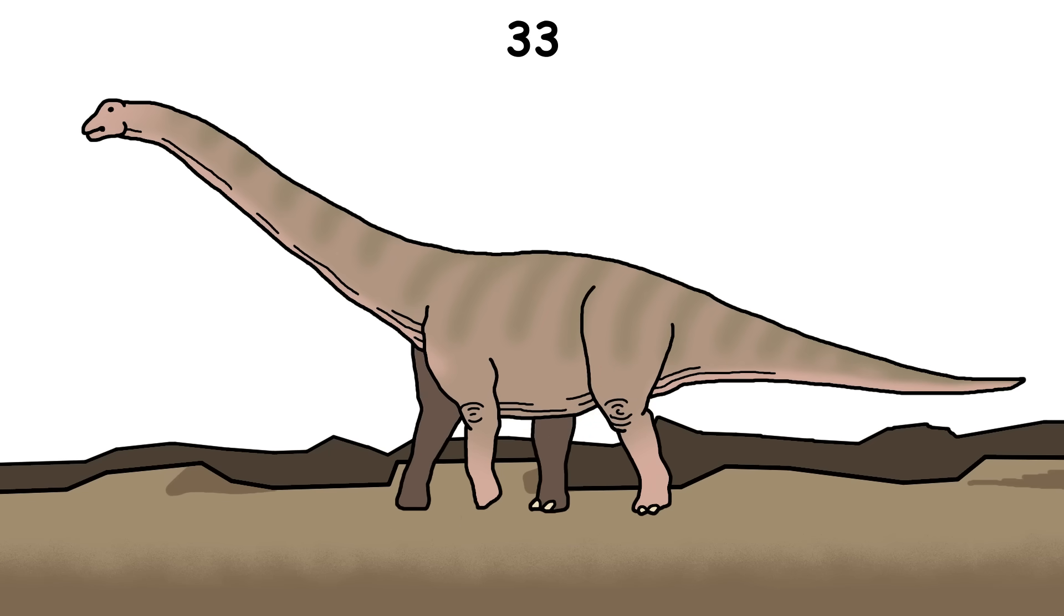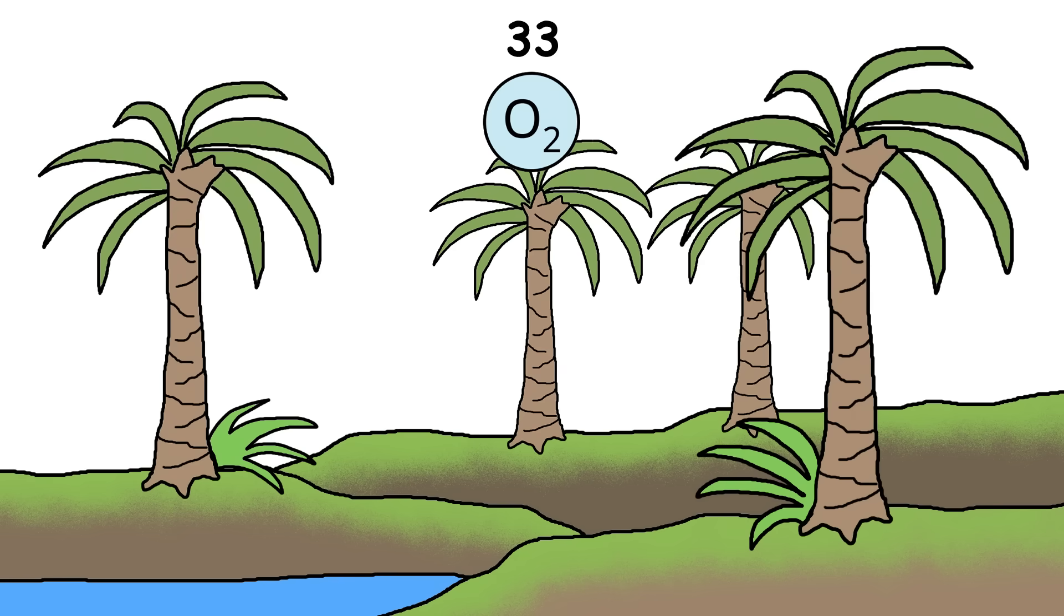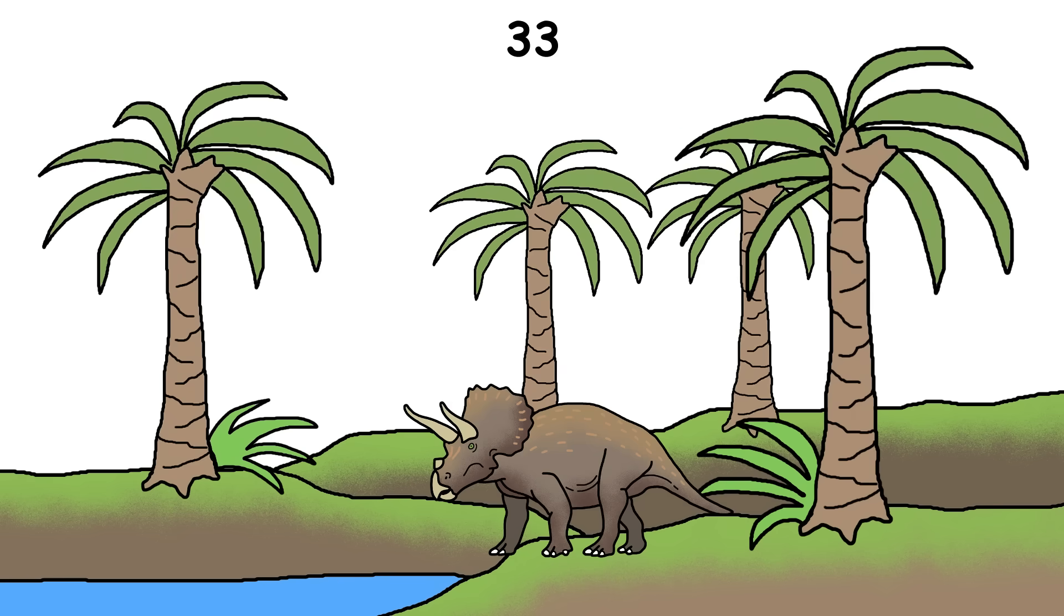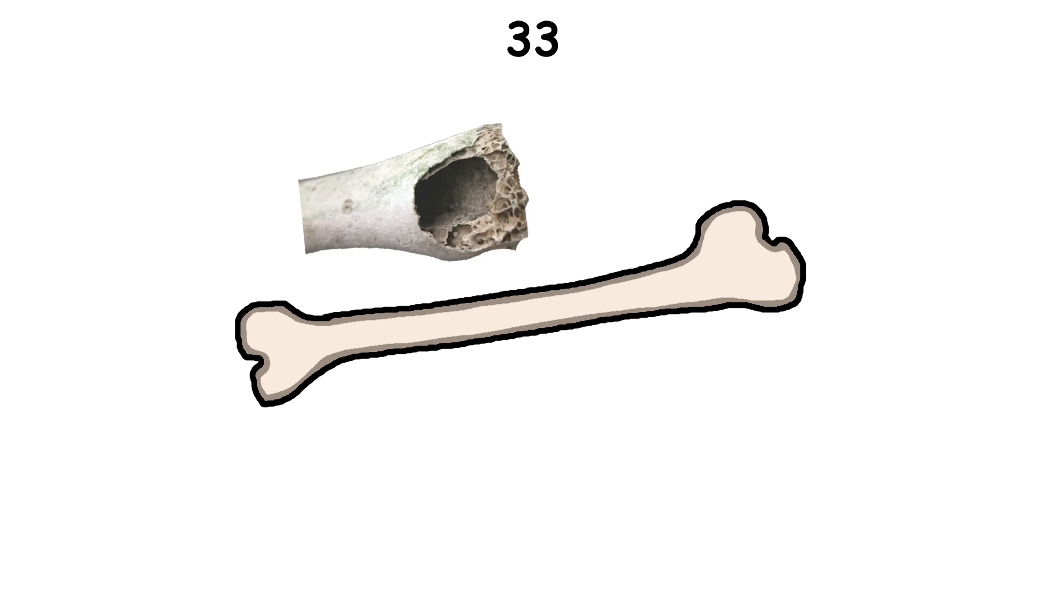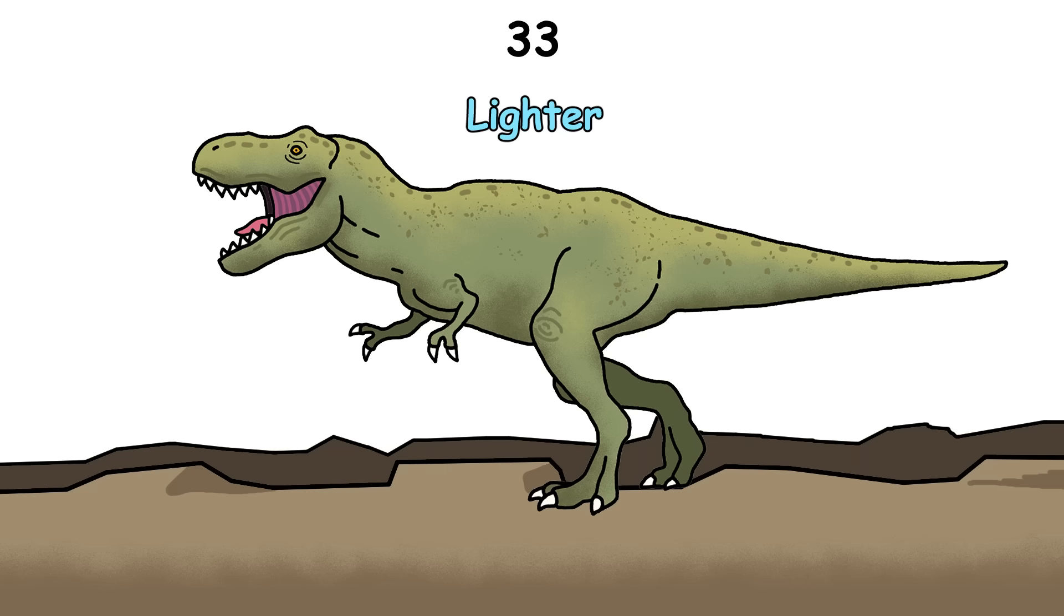The idea that dinosaurs were huge because there was more oxygen back then is a myth. In reality, oxygen levels during much of the Mesozoic were actually lower than today, and dinosaurs didn't grow big because of that. They evolved super-efficient respiratory systems with air sacs and hollow bones, similar to modern birds. This made their bodies lighter and helped them get oxygen more effectively, even in thinner air.